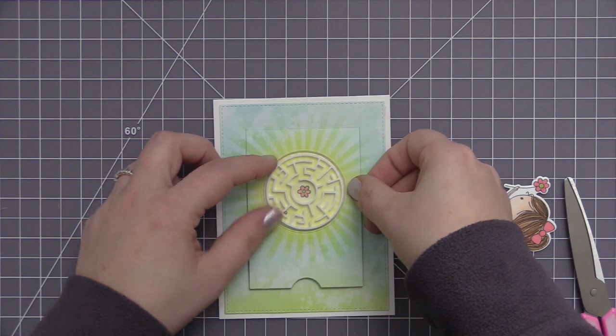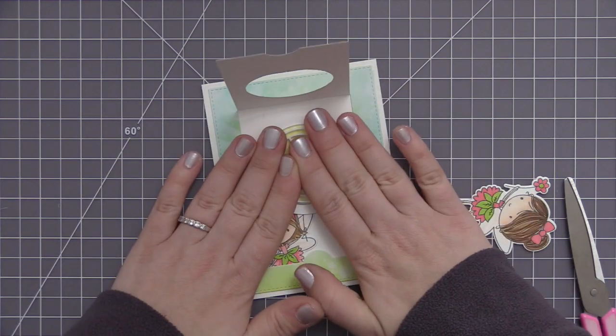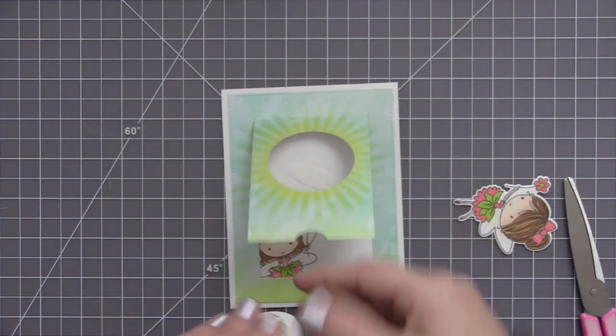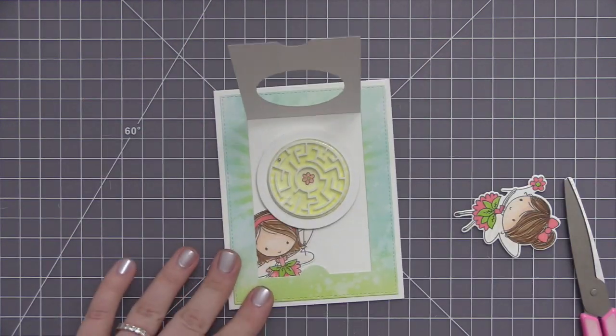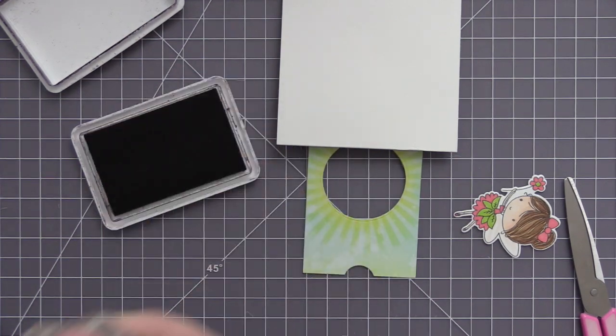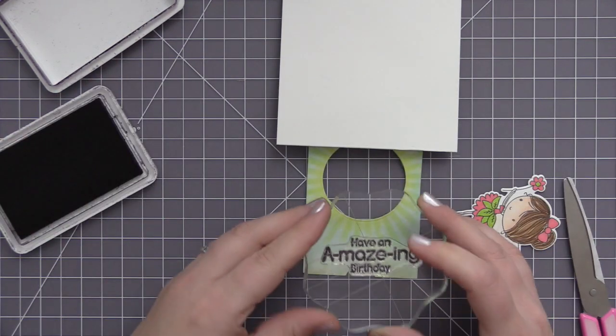So I'm just using some adhesive velcro tabs, these I've had for a really long time, I believe they're made by Tombow. What they do is they allow me to add that velcro to both the maze piece and the inside of the card, which allows me to remove that maze and not have it stay permanently in the card.